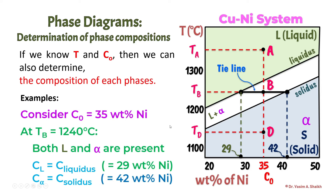This is how you find out the phase composition. The main complication exists when we have two phases; when we have one phase it is simply equal to the overall composition. I hope you understood how to find phase composition. Thanks for watching. All the best.